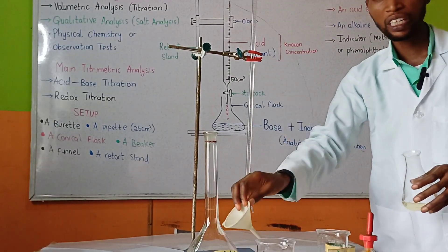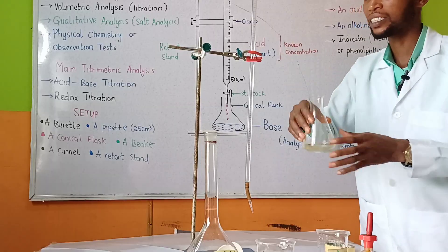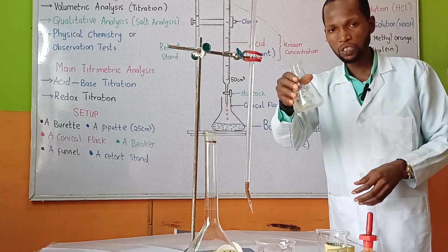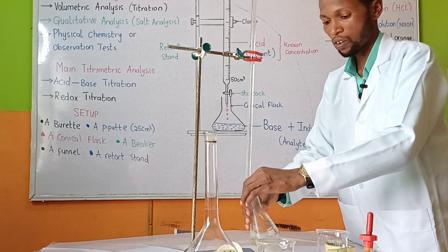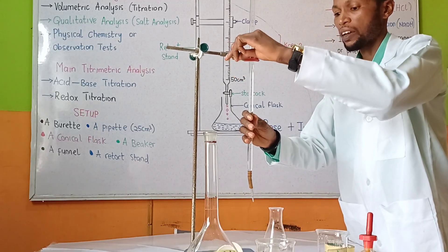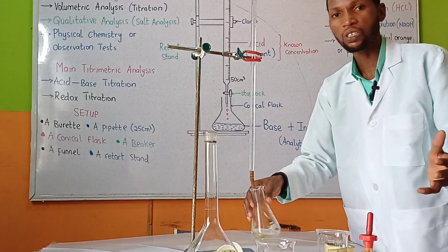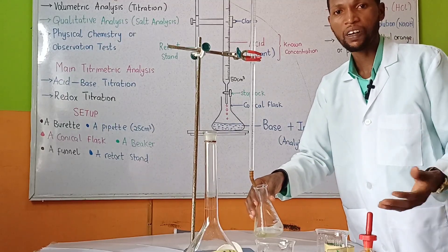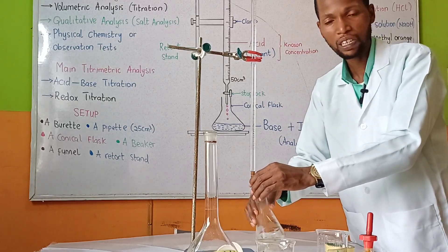Remove the funnel before you start titrating so that no extra drops fall into the solution in the burette. We can now kick-start our titration — the titrant is the hydrochloric acid in the burette, and the analyte is the sodium hydroxide in the conical flask. Continue adding acid from the burette into the conical flask until you observe a color change. At first you will observe the appearance and disappearance of a light pink color as you add the acid.